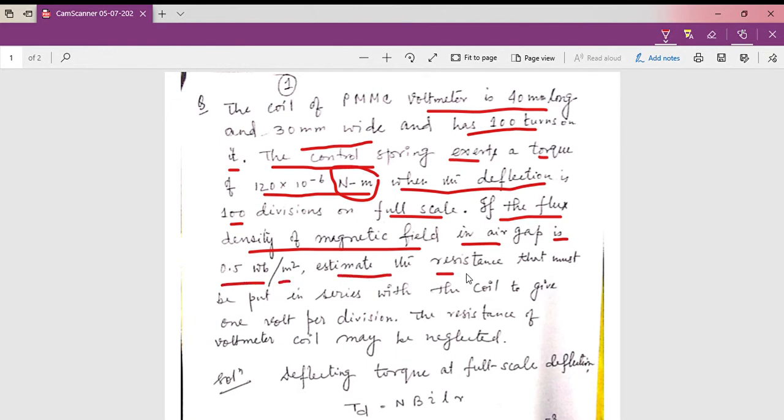If the flux density of magnetic field in air gap is 0.5 weber per meter square, then estimate the resistance that must be put in series with the coil of your PMMC instrument to give one volt per division. The resistance of voltmeter coil may be neglected.